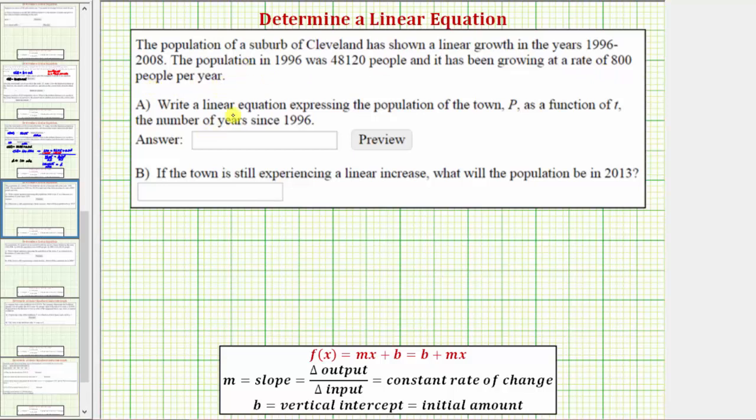For part A, we're asked about a linear equation expressing the population of the town P as a function of t, the number of years since 1996.